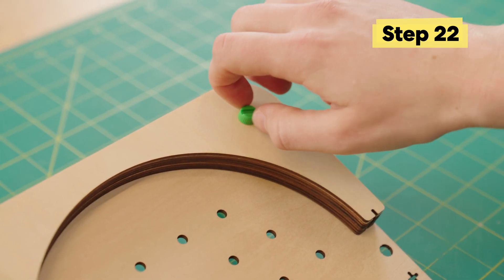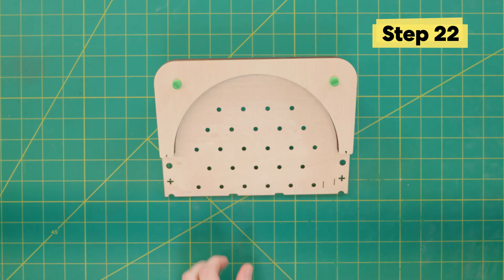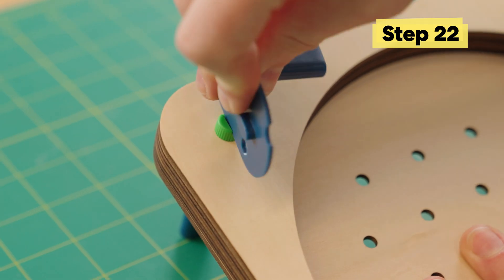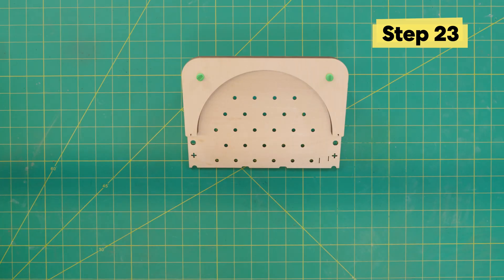Go ahead and secure it into place with two small green bolts. Screw them in nice and tight. Friendly reminder, you can use anything that is 3mm thick or less to help screw in this part.